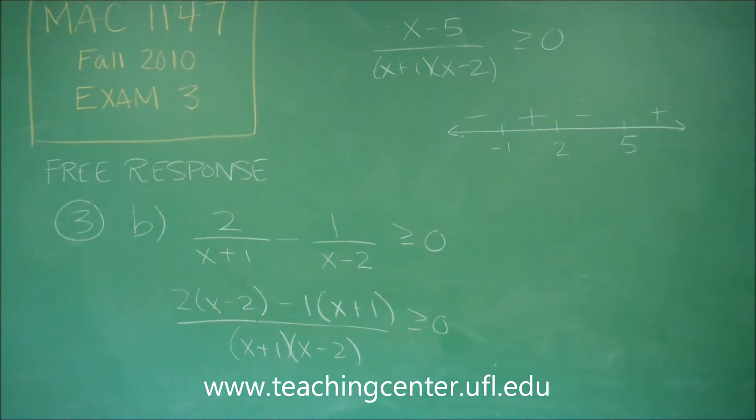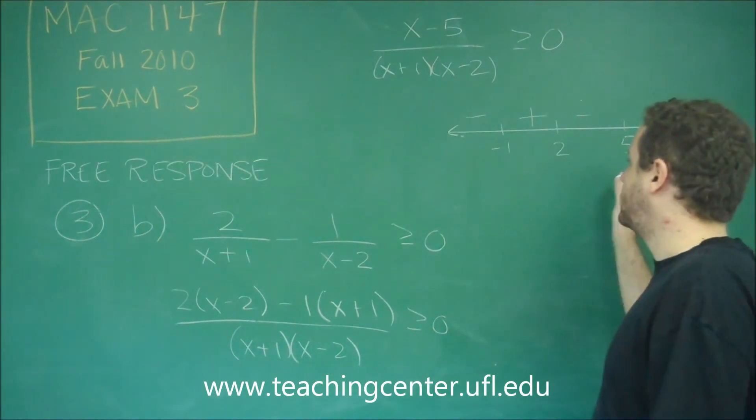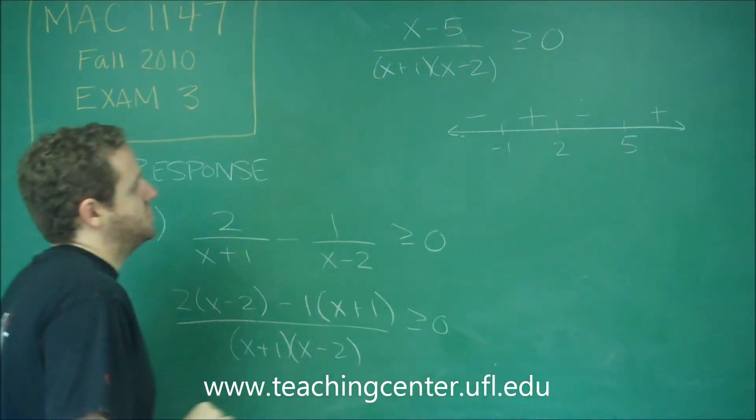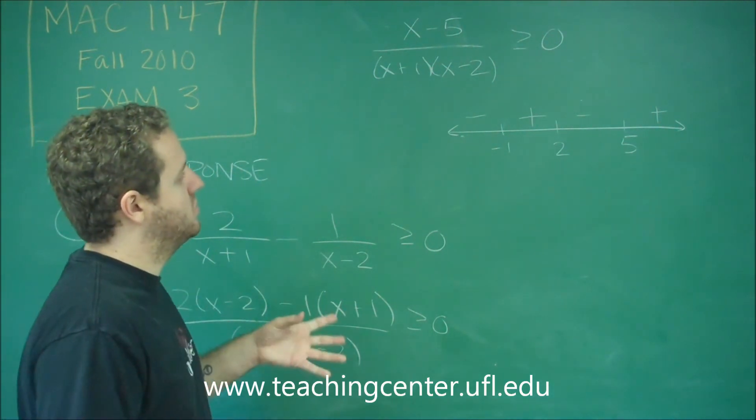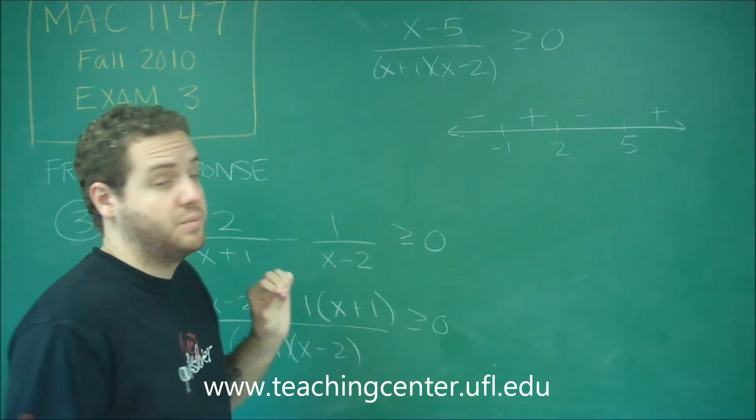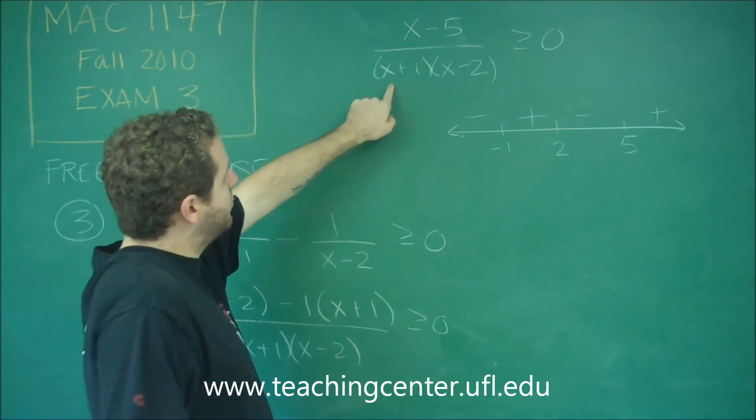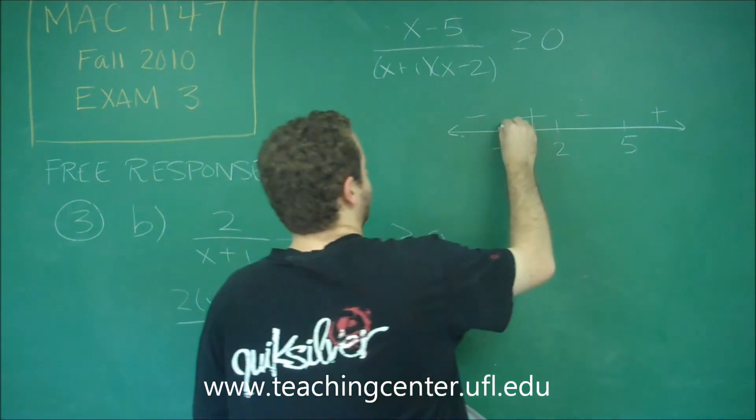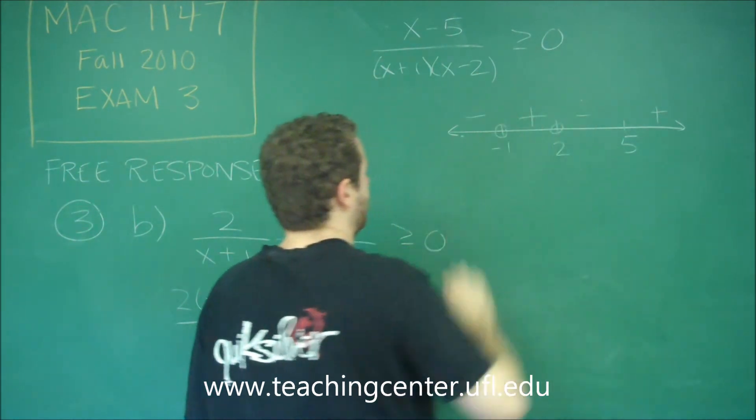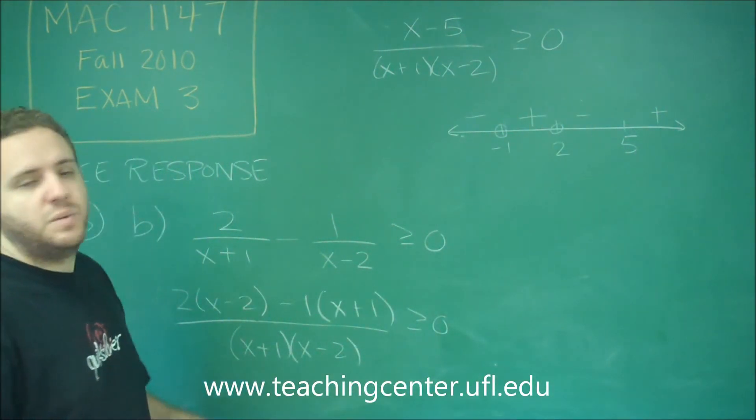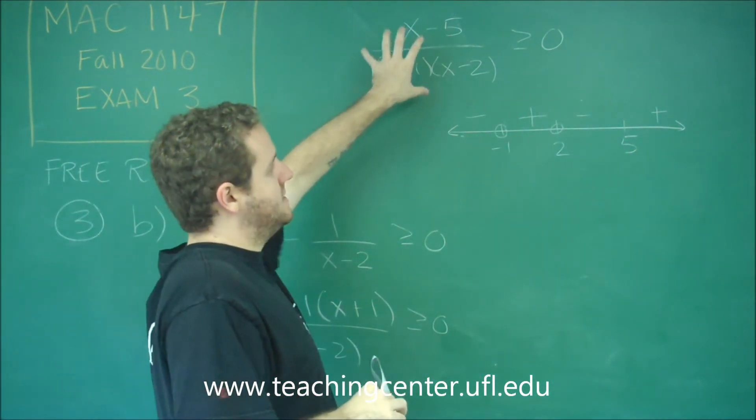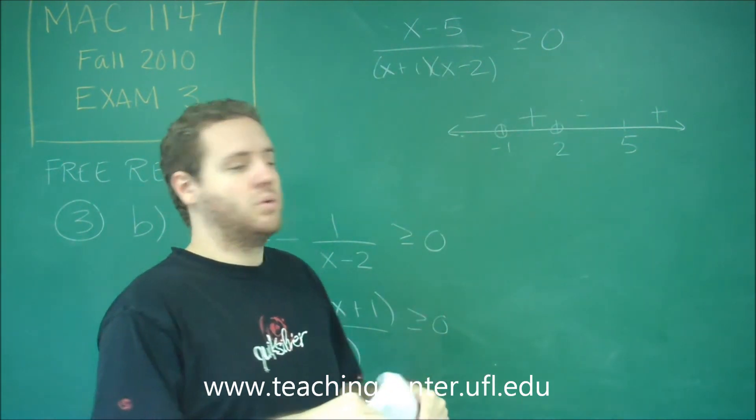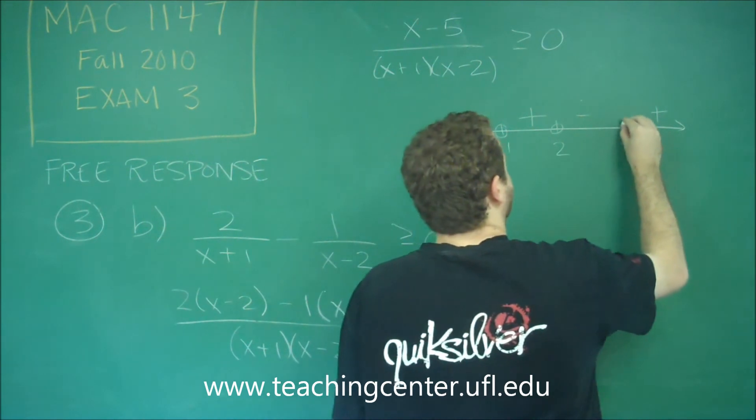So the last thing we need to determine is what's going on at our actual points, negative 1, 2, and 5. Let's check what's happening with those particular numbers. If we plug in negative 1 or 2, we would be dividing by 0. We can't do that, so these have to be open circles no matter what. If we plug in 5, we are going to get 0. That's okay because our inequality is greater than or equal to. So 5 is a closed point.